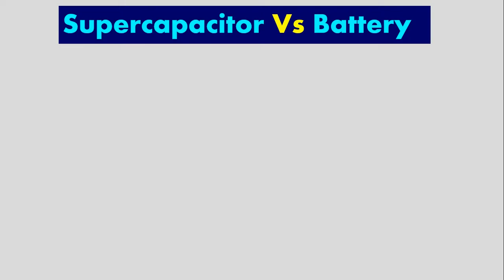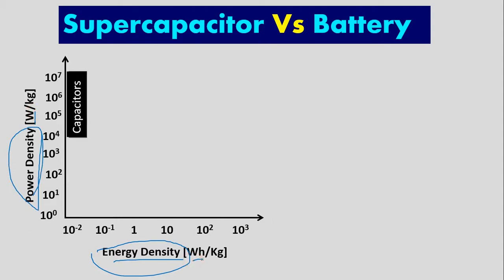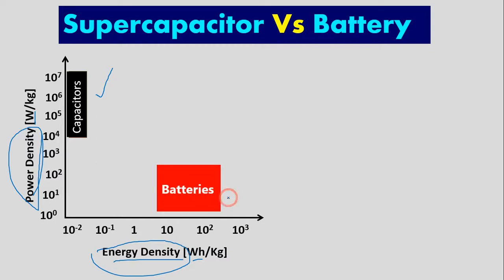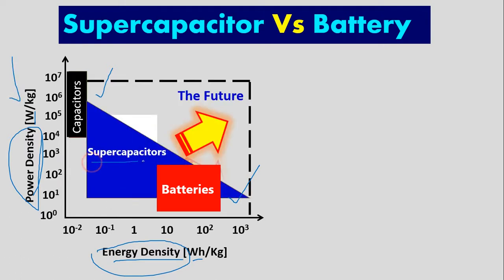If somebody wants to do a master's or PhD by research, they can easily find the problem. Look at the diagram: here we have power density on one axis and energy density on the other. This is watts per kilogram and here is watt-hour per kilogram. Here we have a capacitor, which is also an energy storage device, and here we have batteries. This means that batteries have more energy density while capacitors have more power density, and supercapacitors are in between.